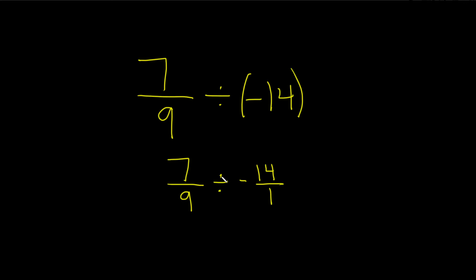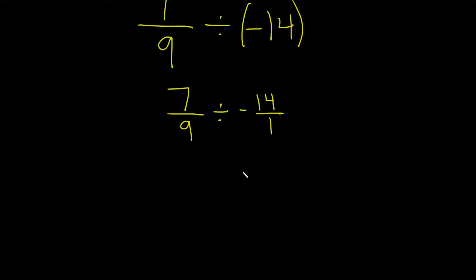Now that it's written as a fraction, we can do the division. Whenever you divide, you're supposed to multiply by the reciprocal. So we write this down again, 7 over 9. Change this to a times. And then we just flip this number. That's called the reciprocal. So negative 1 over 14.